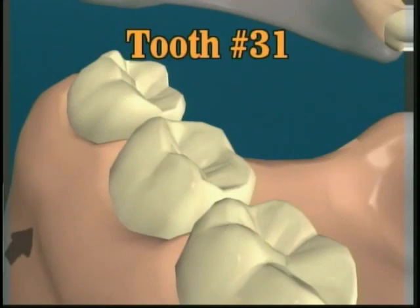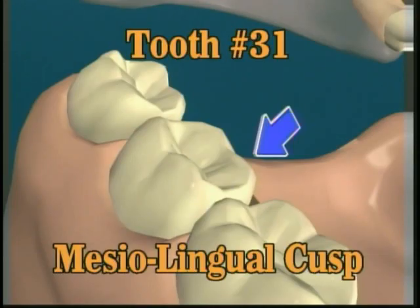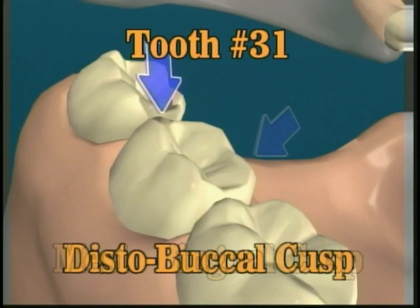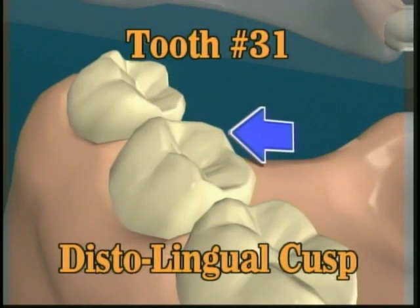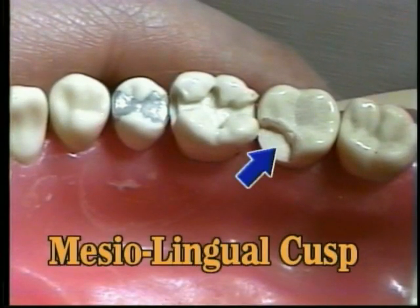This is tooth number 31. The four cusps on the tooth are the mesial buccal, the mesial lingual, the disto buccal, and the disto lingual cusps. On this tooth number 31, the mesial lingual, or ML, cusp has fractured off and is missing.